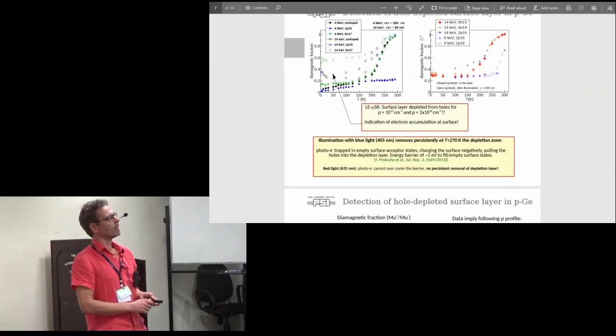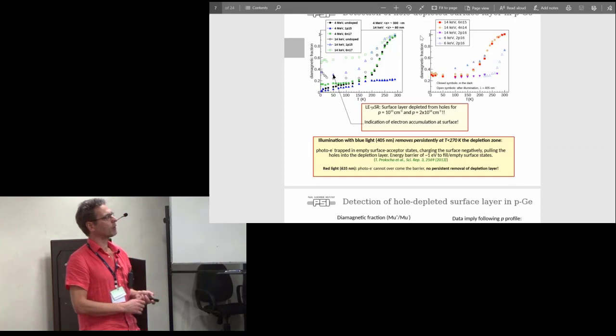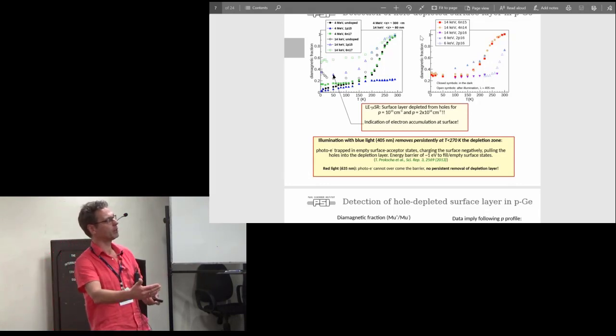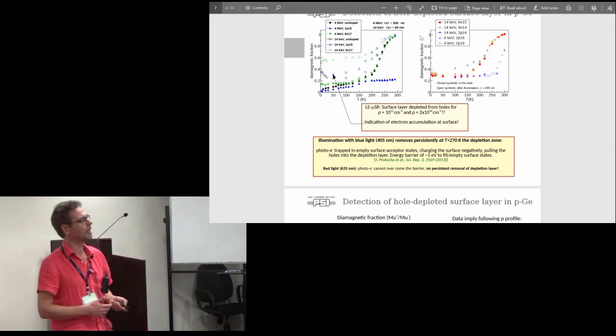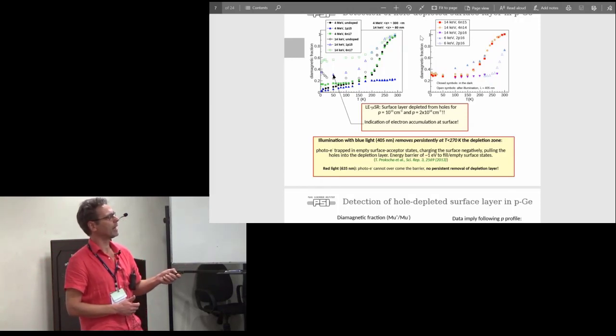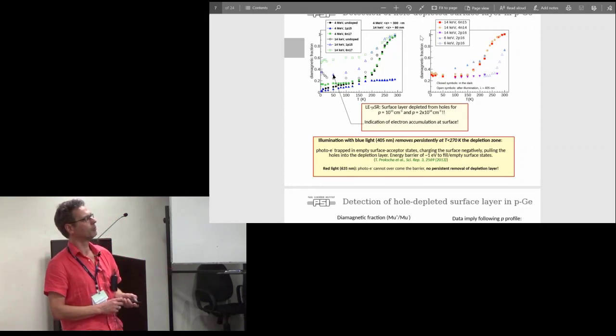Now if we compare various wafers where we implant the muons with 4 MeV, so we go a few hundred micrometers deep, then we use the same wafers and just go 80 nanometers deep, we see a big difference. These solid points are various wafers: the black is an undoped wafer, the green is an n-type, and the blue one is a p-type with 10 to the 15th per cubic centimeter holes.